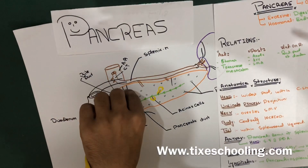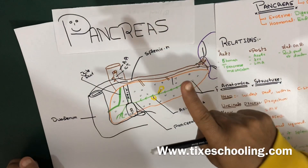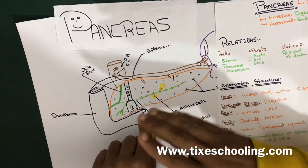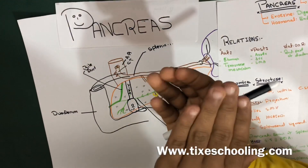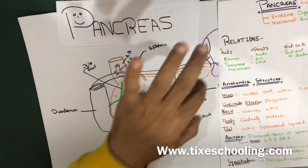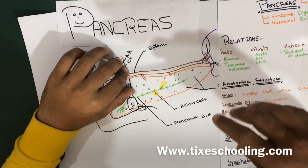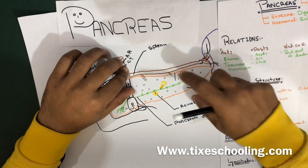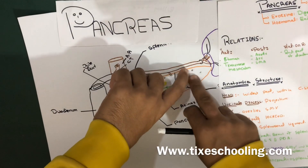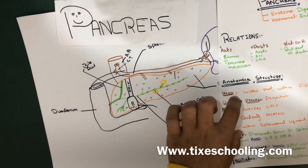The neck is located between the head and the body of the pancreas; it overlies the superior mesenteric vessels, which form a groove in its posterior aspect. The body is centrally located, crossing the midline, lying behind the stomach and to the left of the superior mesenteric vessels. The tail is the left end of the pancreas, lying in close proximity to the hilum of the spleen, contained within the splenorenal ligament with the splenic vessels — it is the only intraperitoneal part of the pancreas.